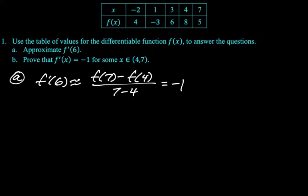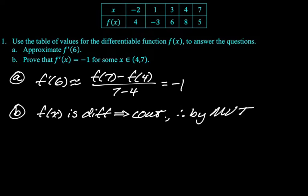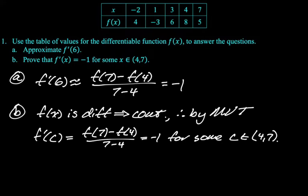Now part B, it says prove that f'(x) equals negative one for some x between four and seven. We do not know that that happens at six, we just know that it happens. So we're gonna use mean value theorem on this, because it's definitely the mean value theorem setup. We need to know that the function is continuous on closed interval, differentiable on the open, but we're just told it's differentiable. So I'm gonna say f(x) is differentiable, which implies that it is continuous. Therefore by mean value theorem, f'(c) is going to be f(7) minus f(4) over seven minus four, which is negative one as we calculated previously for some c between four and seven.